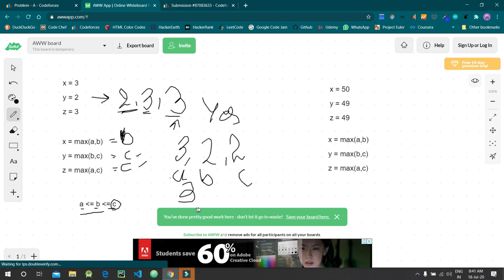When we take maximum of (a, b), the answer x is 3. When we take maximum of (b, c), we get 2. When we take maximum of (a, c), the number is 3. You can see clearly that we are able to obtain this from this.